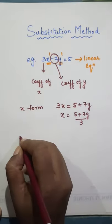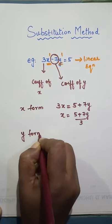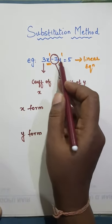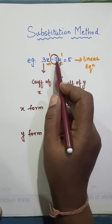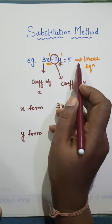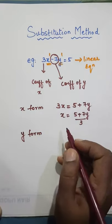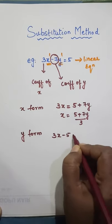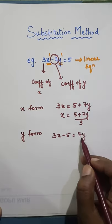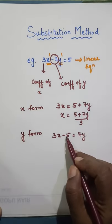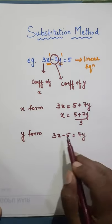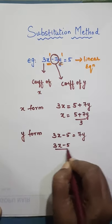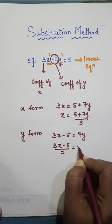Similarly, you can convert into y form also. In y form, we want y, we don't want minus y. So let us take this minus 7y to RHS so that it will become positive. So 3x minus 5 equal to 7y. Since I have taken 7y there, 5 was positive so it became negative. So now 3x minus 5 upon 7 equal to y.